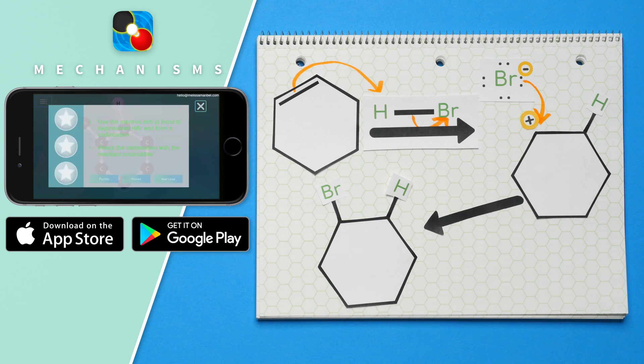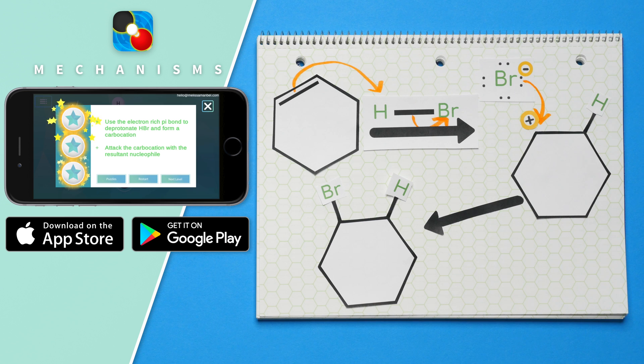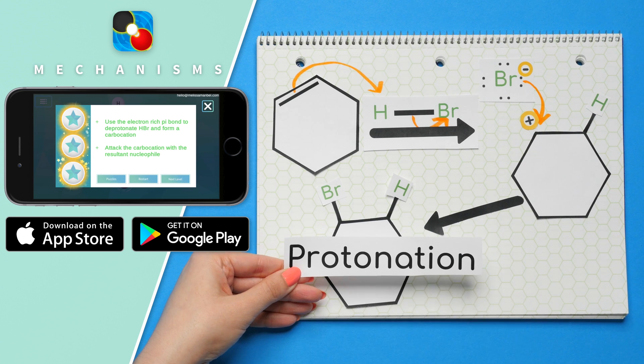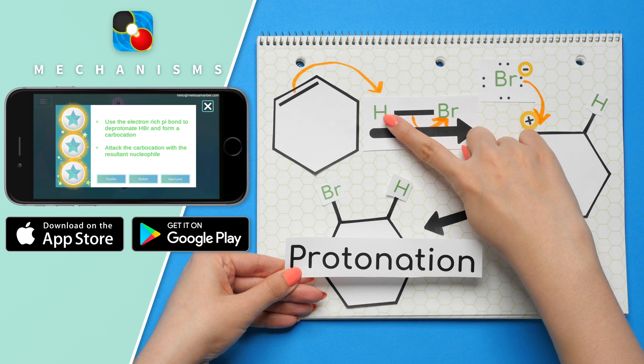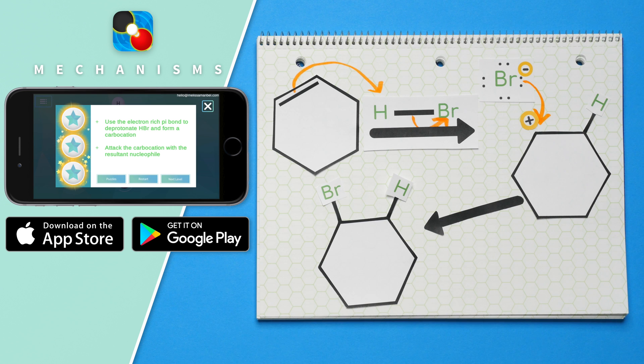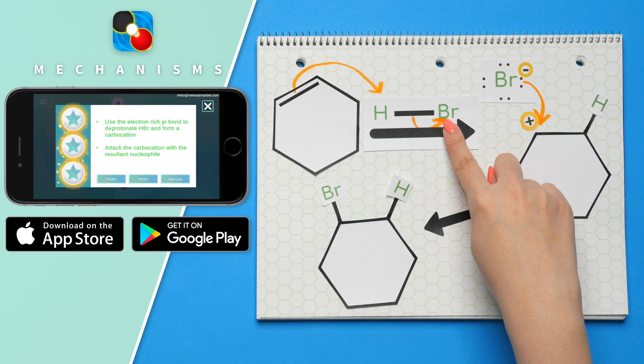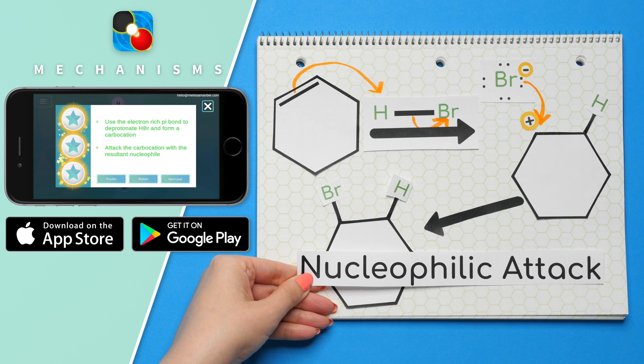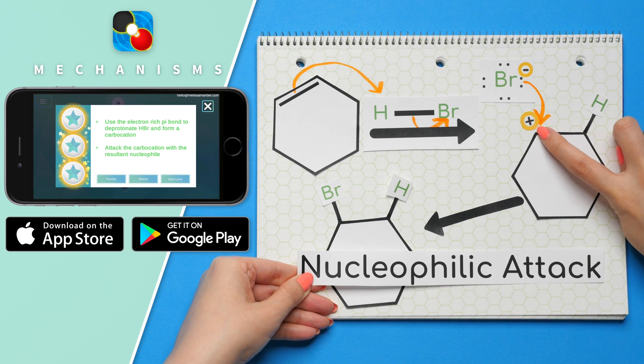The mechanisms app even shows you the steps you need to take for each type of reaction. Here we see there are only two steps. One was protonation of the carbon in the double bond, or we can state this as the deprotonation of HBr, meaning we remove the hydrogen from HBr. The second one was our nucleophilic attack on the carbocation.